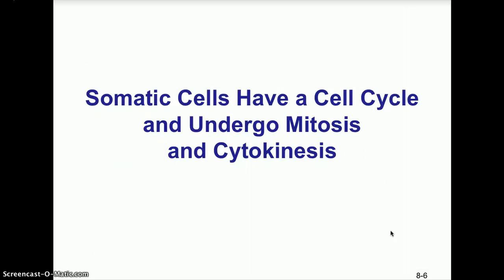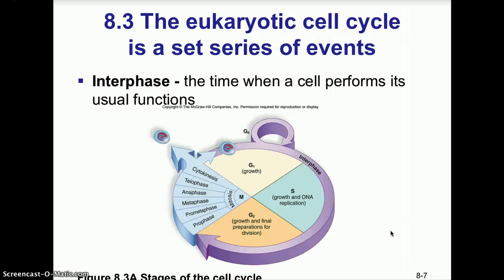Somatic cells have a cell cycle and undergo mitosis and cytokinesis. In the eukaryotic cell cycle there is a series of events; most cells spend the majority of their time in interphase, performing usual functions. Interphase consists of G1 (growth), S phase (DNA replication), and G2 (growth and final preparation for division). Then comes the M phase, which includes mitotic cell division and cytokinesis.